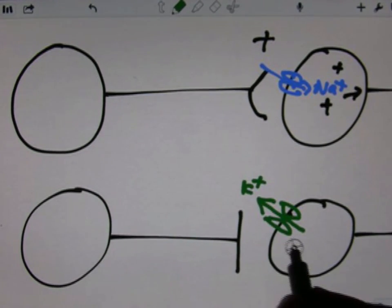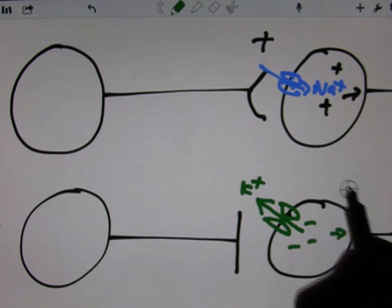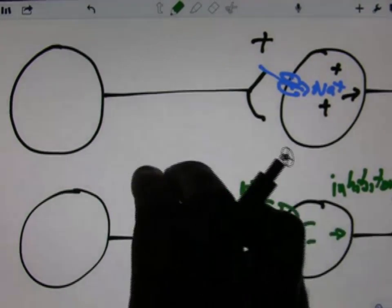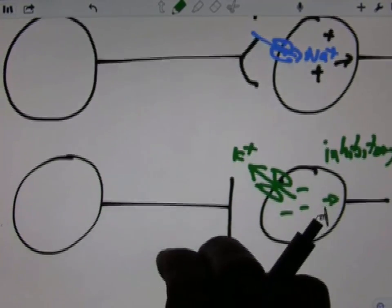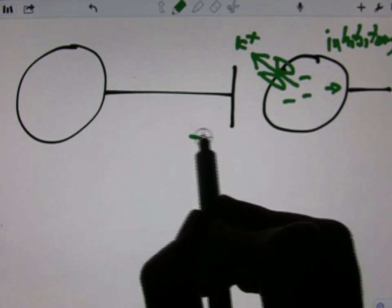And as it does, it makes the cell more negative, and that's inhibitory. You're less likely to get a new action potential. If you want to be sure, you can label that as negative.